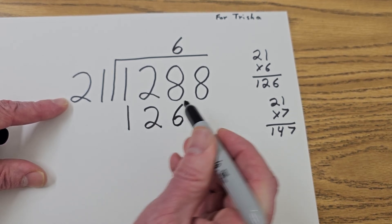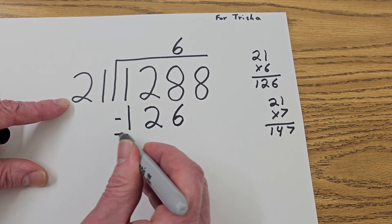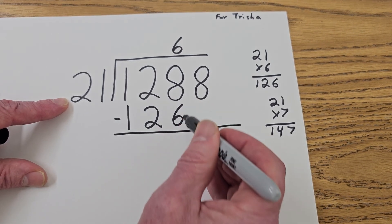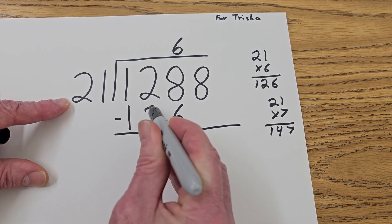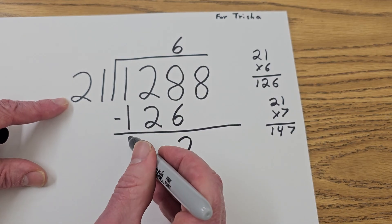And our next step would be subtraction. So I'm going to go ahead and subtract here, Tricia. And what is 8 minus 6? 8 minus 6 would be 2. And then 2 minus 2 is 0, and 1 minus 1 is 0.